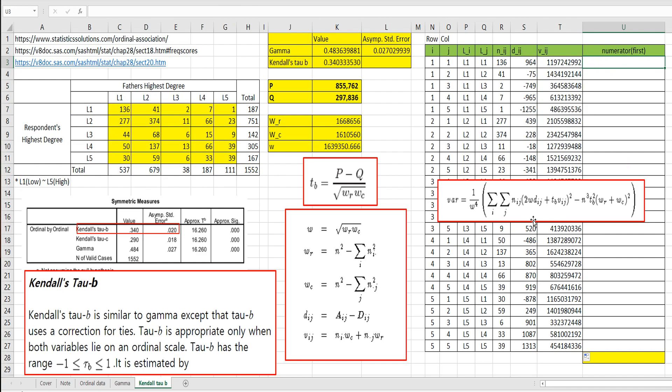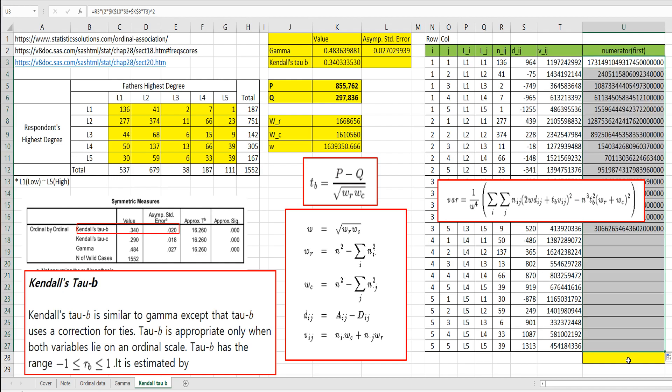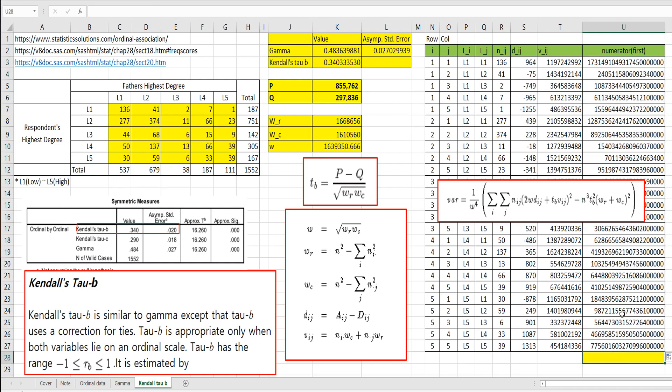So for numerator part, first numerator part, let's calculate it. N11, multiply by 2, multiply by W, fix it. Press F4, comma, and multiply by D11, plus tau B, press F4, comma, multiply by V11, close form, and square it. Let's add up all values.